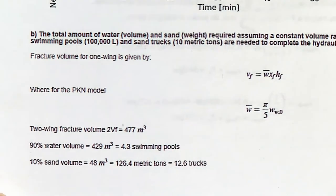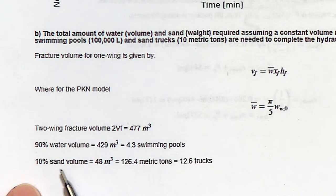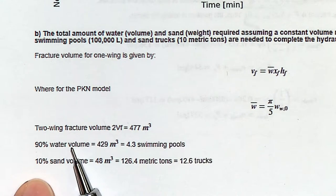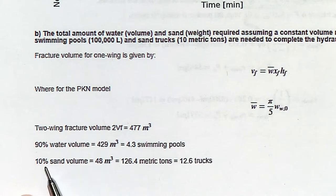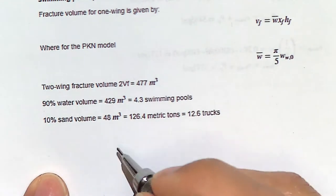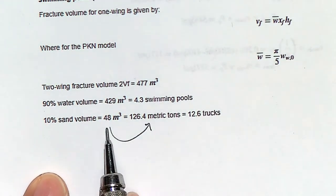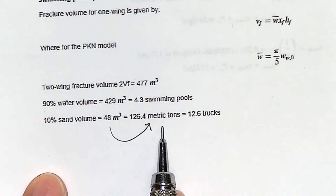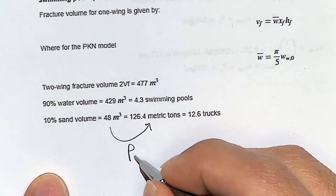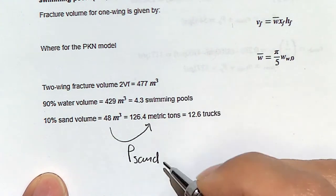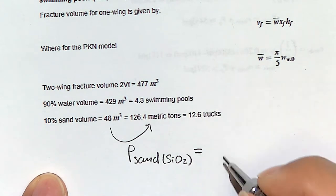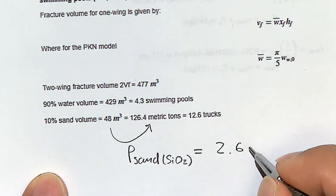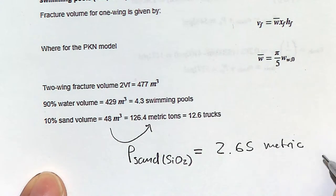Considering that 90% of that volume is water, that gives you about 420 cubic meters — roughly four swimming pools. The other 10% is sand. To convert from volume to weight you use the density of sand, or the density of quartz, which is 2.65 grams per cubic centimeter.